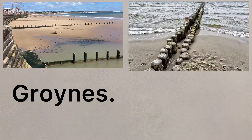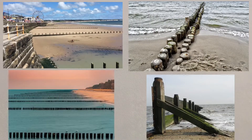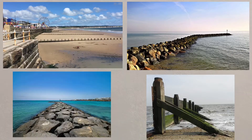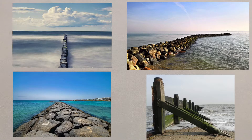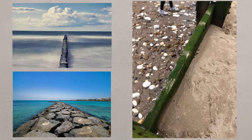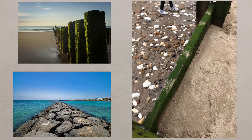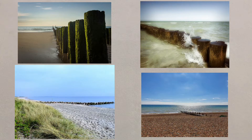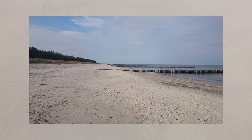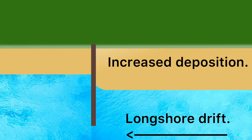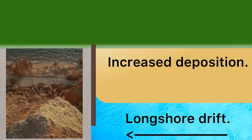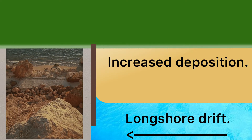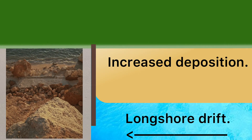Groins are a common sight along many beaches. These wooden or rock structures are built out perpendicular to the coast, and their purpose is to trap sediment from longshore drift. By doing so, the beach is developed to a point where the energy from the waves is diminished, whilst at the same time there's a good beach for tourists to enjoy. However, by interrupting longshore drift, beaches further along the coast are starved of sediment, which can lead to increased rates of erosion. This just shifts rather than solves the issue.